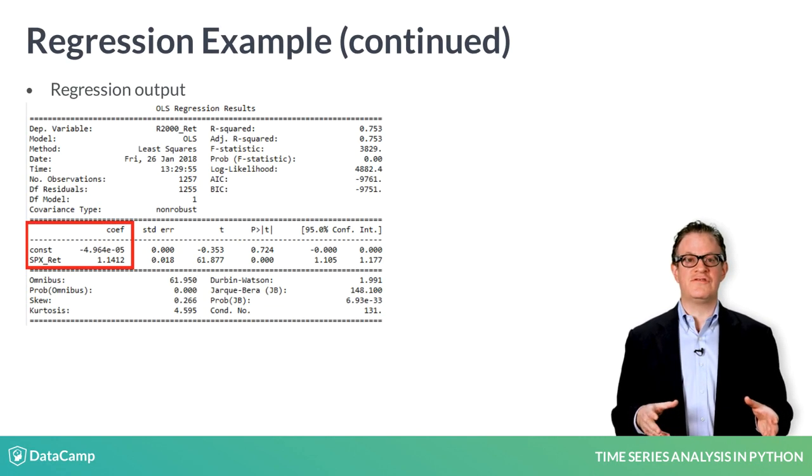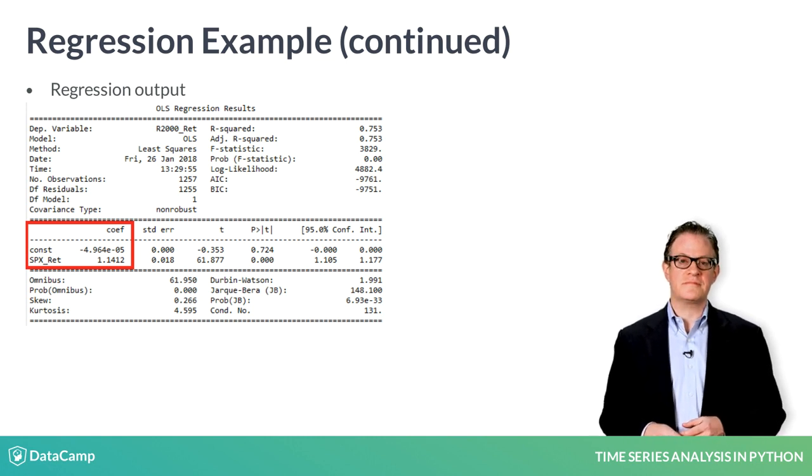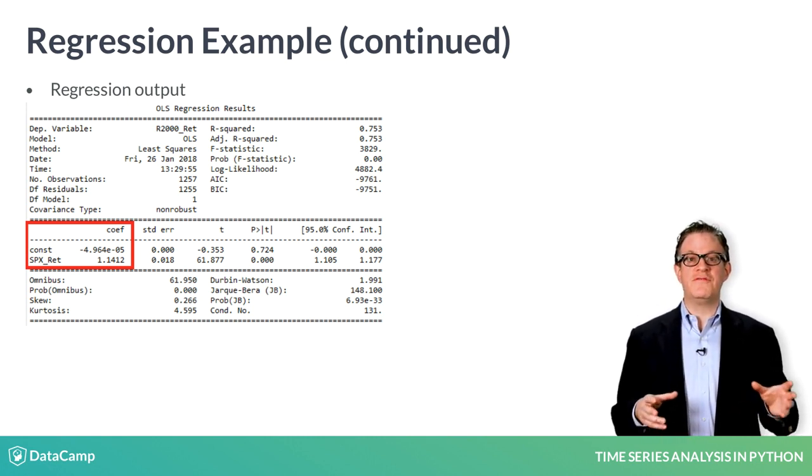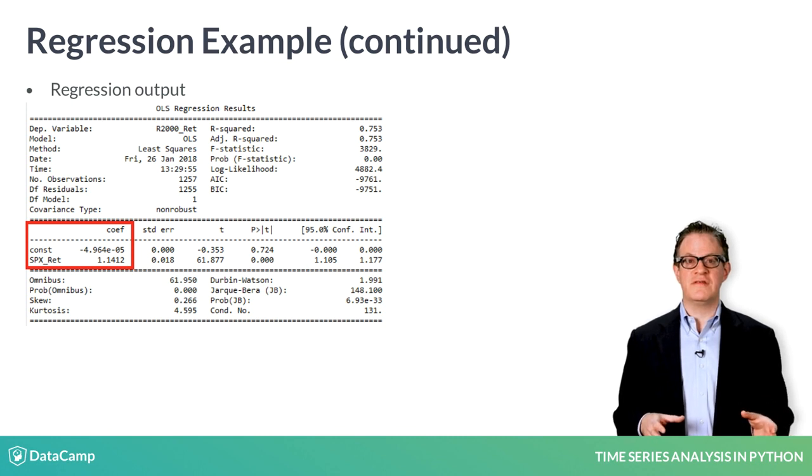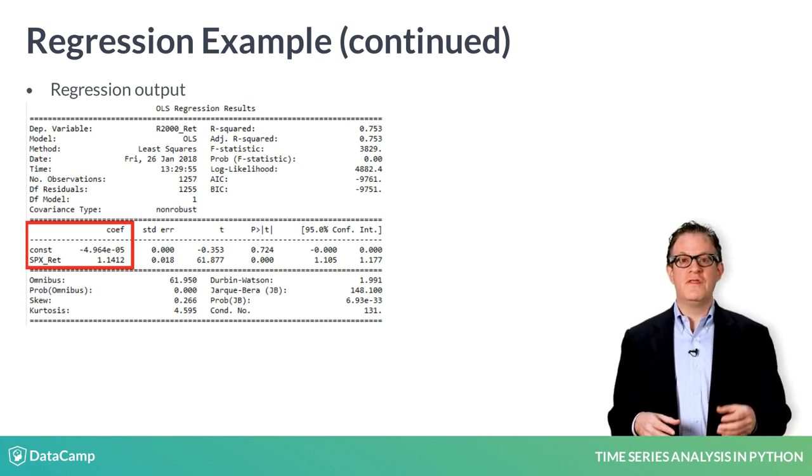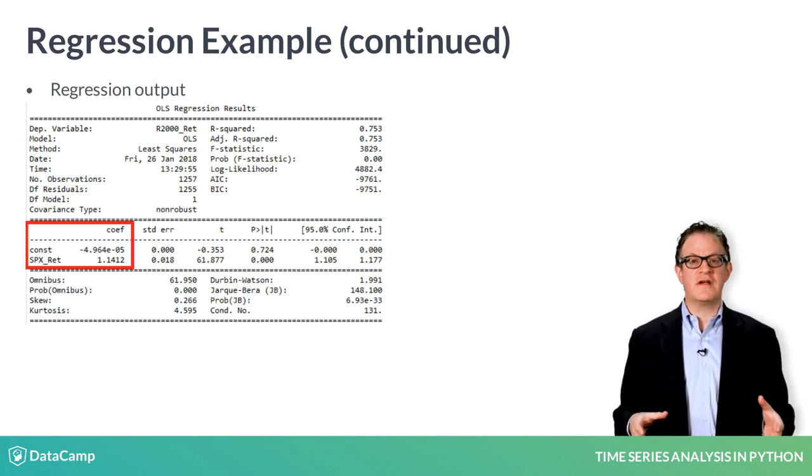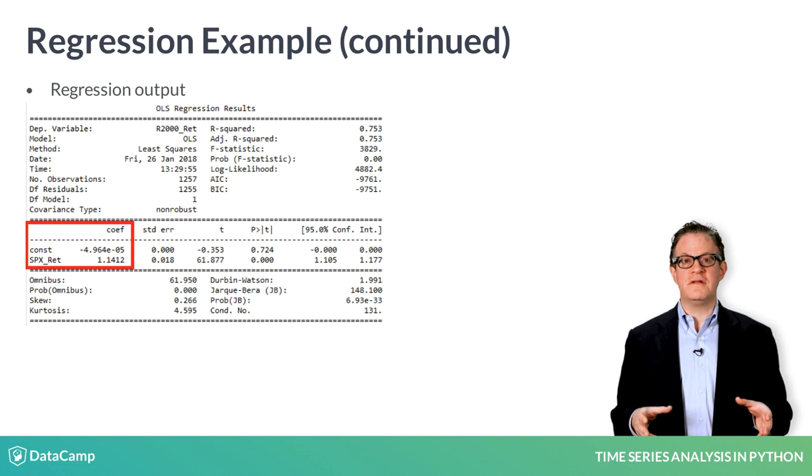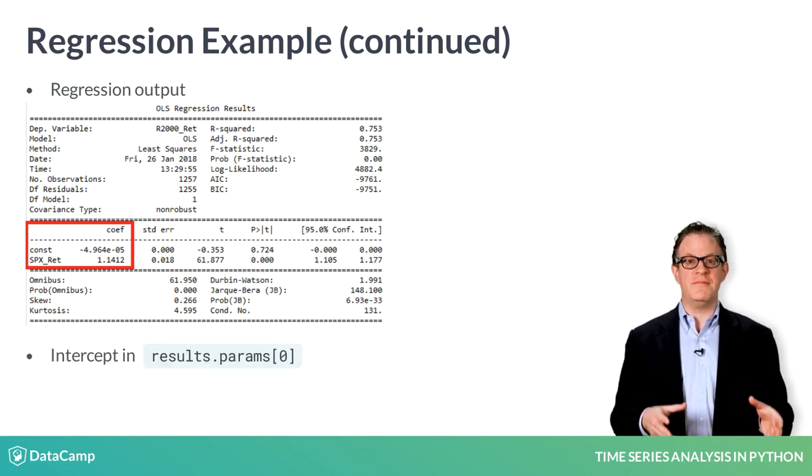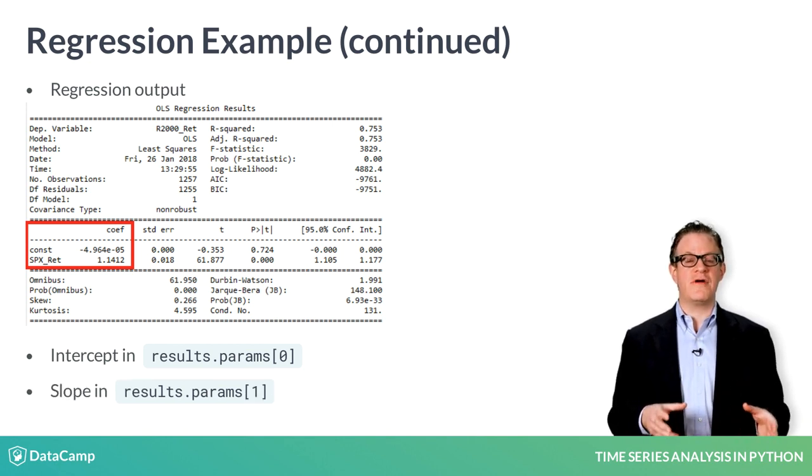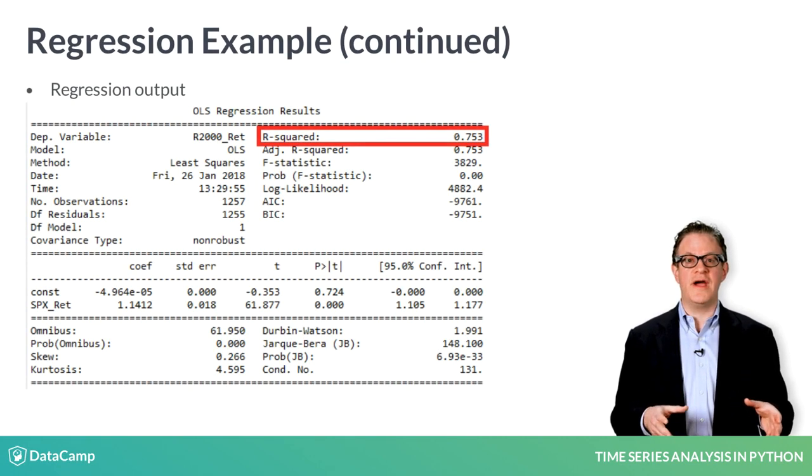The summary method of results shows the entire regression output. We will only focus on a few items of the regression results. In the red box, the coefficient 1.1412 is the slope of the regression, which is also referred to as beta. The coefficient above that is the intercept, which is very close to 0. You can also pull out individual items from results, like the intercept in results.params 0, and the slope in results.params 1. Another statistic to take note of is the R-squared of 0.753. That will be discussed next.